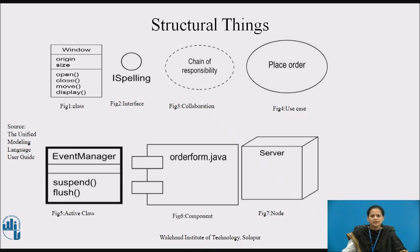Starting with structural things — structural things are the nouns of UML models. These are the mostly static parts of a model representing elements that are either conceptual or physical. In all, there are seven kinds of structural things. First, a class is a description of a set of objects that share the same attributes, operations, relationships and semantics. Graphically, a class is rendered as a rectangle, usually including its name, attributes and operations in three different compartments.